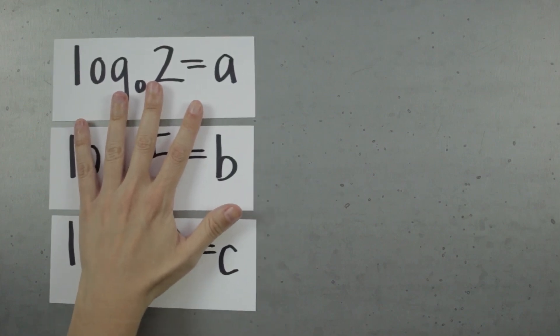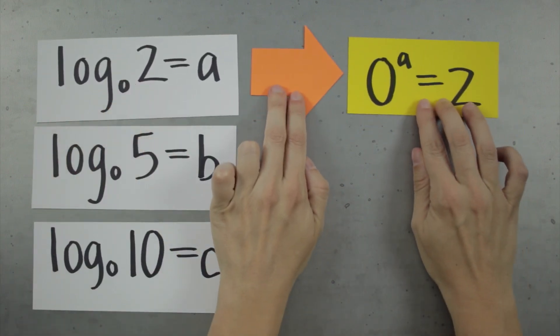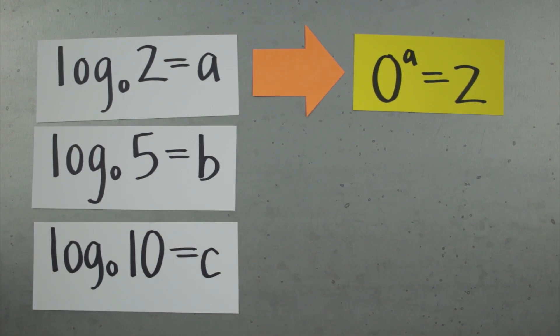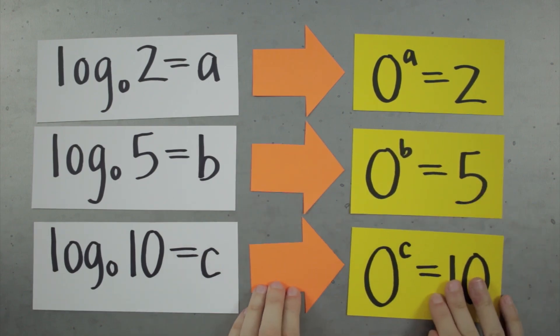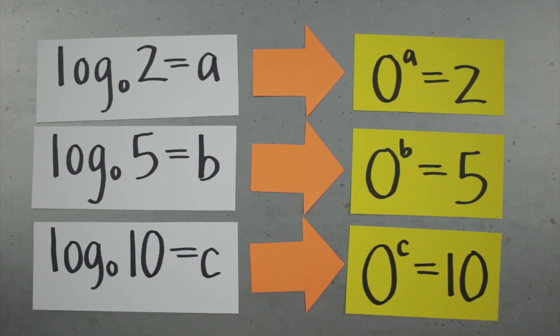Well if b is 0, then every one of these logs is undefined because they turn into these equations, and we can't solve for a or b or c. There's nothing we can raise b to that's going to give us 2 or 5 or 10. Because 0 raised to anything is still 0. So that's why we don't allow 0 to be the base of a logarithm.